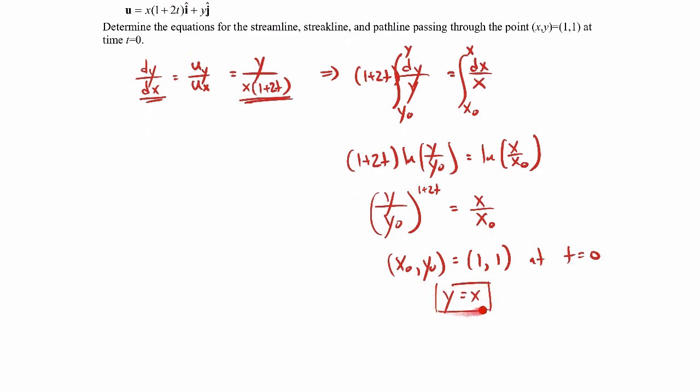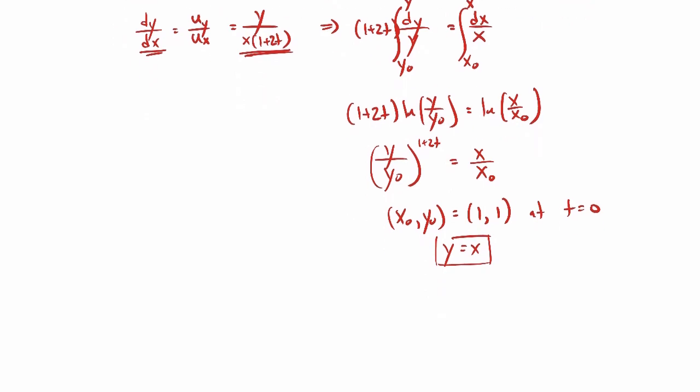So the streamline through the point (1,1) at t equals zero is just a straight line with a slope of 1: y equals x. In general, at any given time and any given initial point, that's what the streamlines look like using that equation.